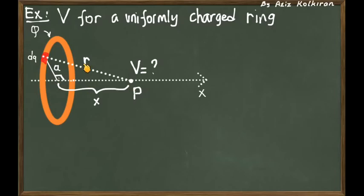So r can be expressed in terms of a and x. Then we can easily express the potential of this charge dq at the point P. It's just k times dq divided by r, and we can express r in terms of, as I said, a and x.